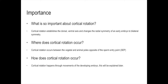We can ask the question: what is so important about cortical rotation? Cortical rotation establishes the dorsal-ventral axis and changes the radial symmetry of the early embryo to bilateral symmetry. Cortical rotation occurs between the vegetal and animal poles, opposite of the sperm entry point, or the SEP. Cortical rotation occurs through the movements of the developing embryo, which will be explained in detail later.